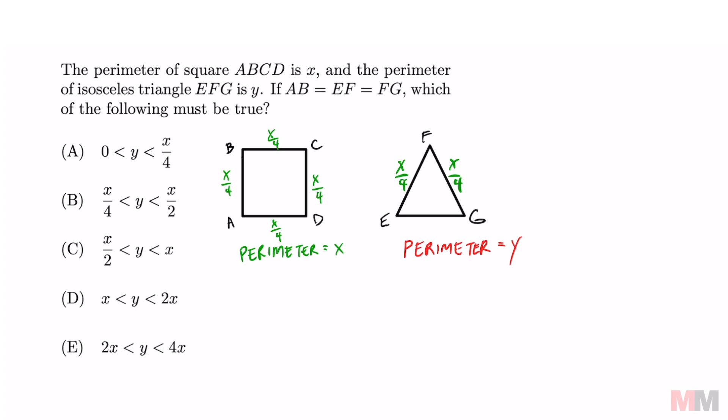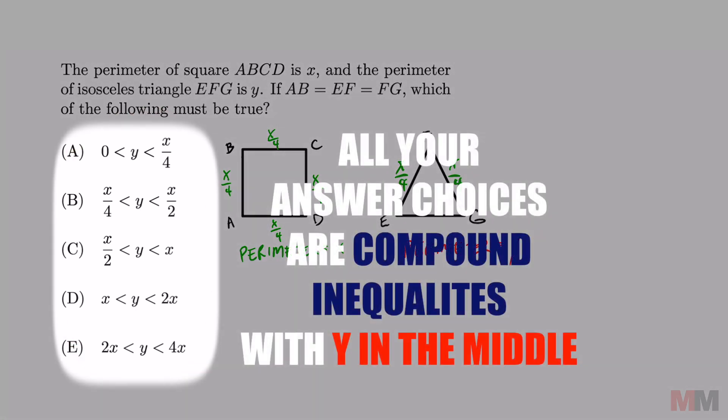Which of the following must be true? Let's observe what the answer choices look like first. All of these have the perimeter of Y in the middle written as some kind of compound inequality.